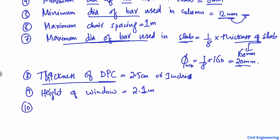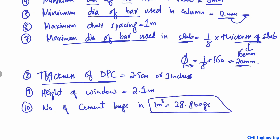The last point is the number of cement bags in 1 cubic meter. In 1 cubic meter of volume, you can have 28.8 cement bags. Keep in mind that each bag has a mass of 50 kilograms, as discussed earlier.